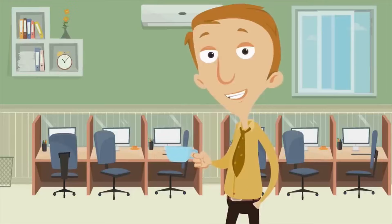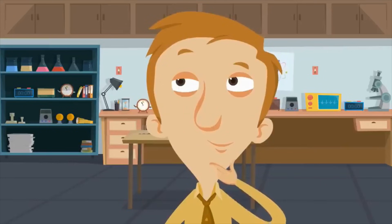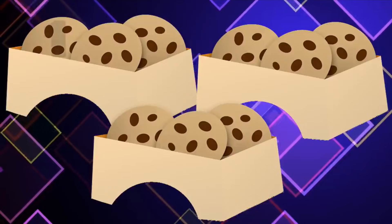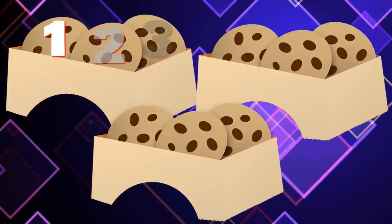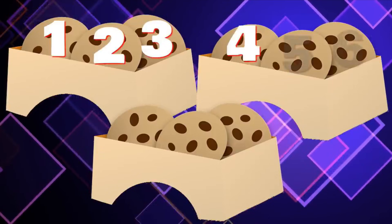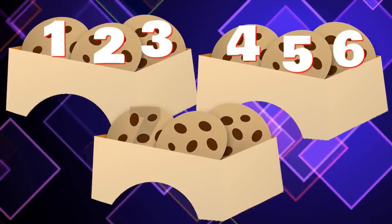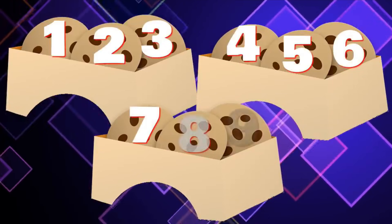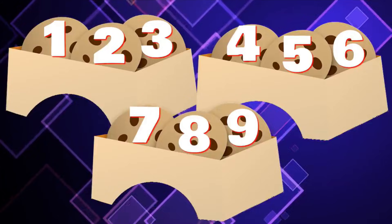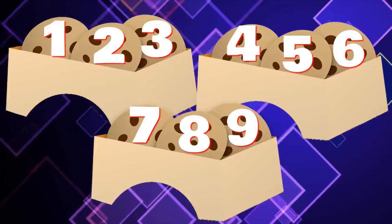We could even count the cookies to double check. Three cookies, three times: one, two, three, four, five, six, seven, eight, nine. Three times three equals nine.